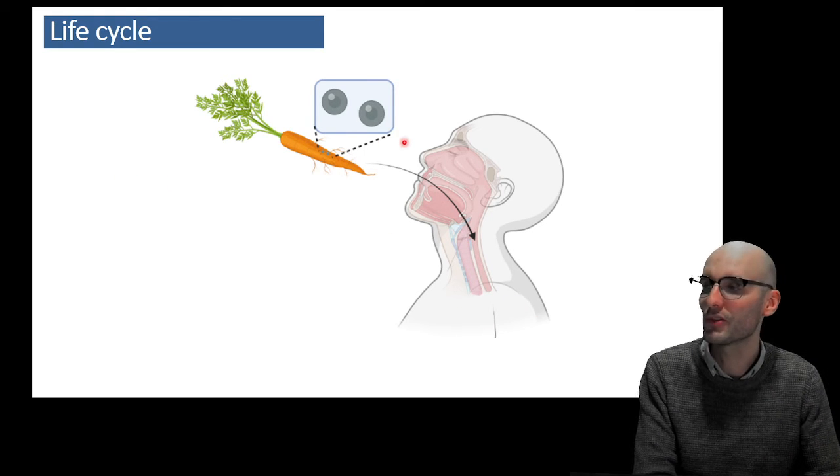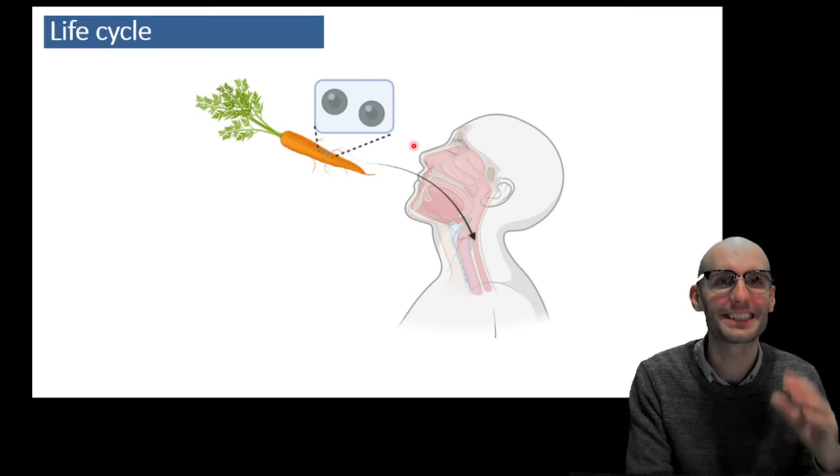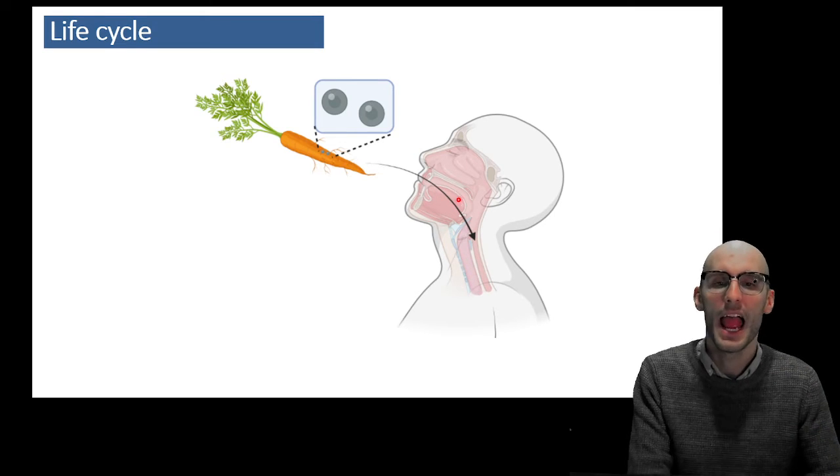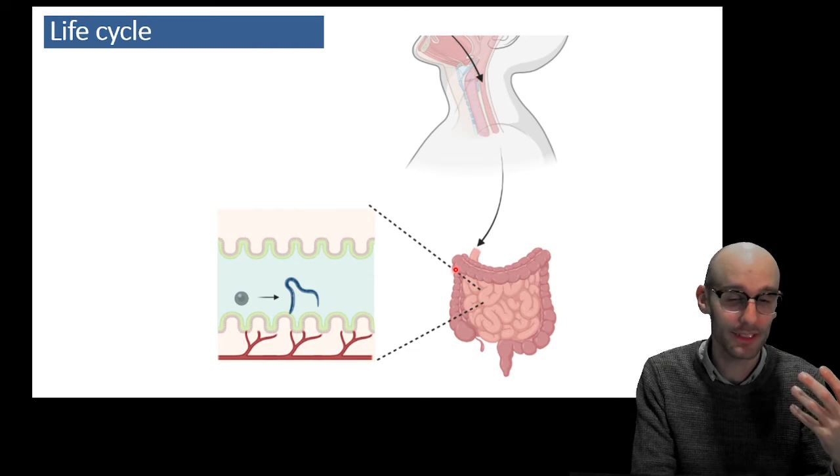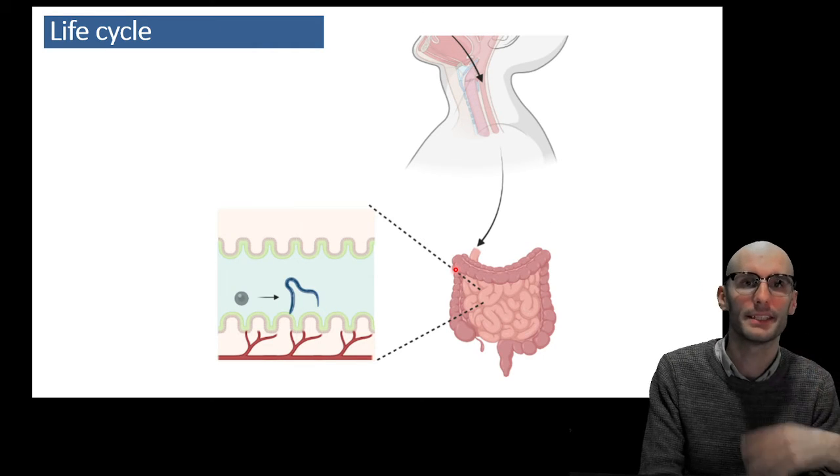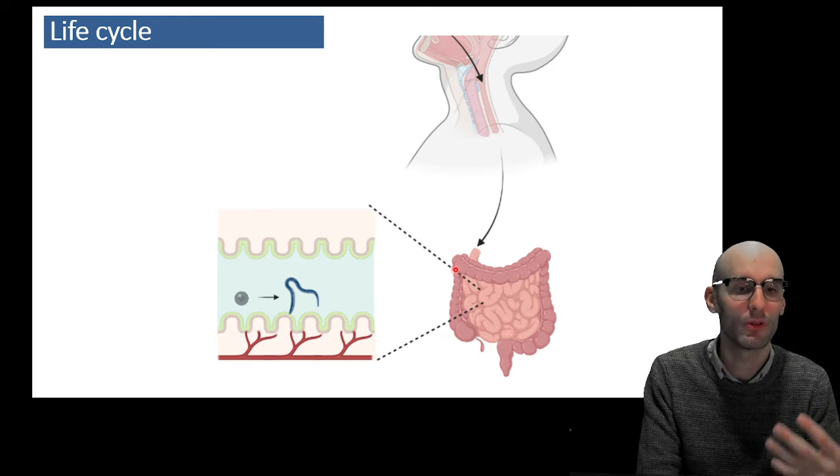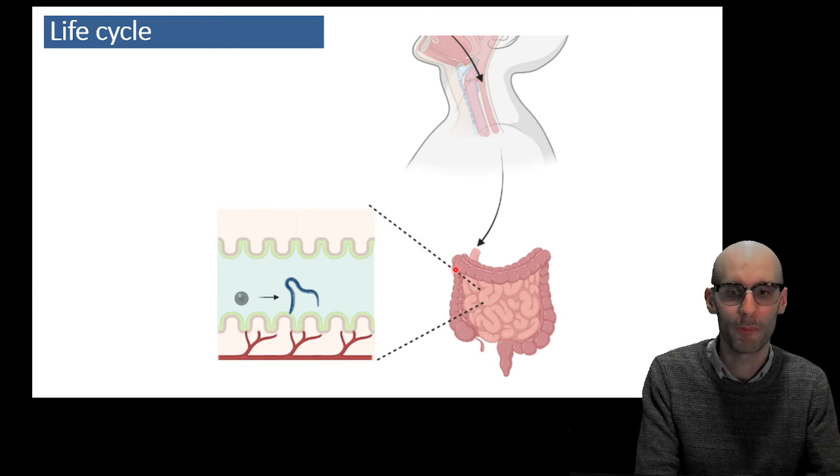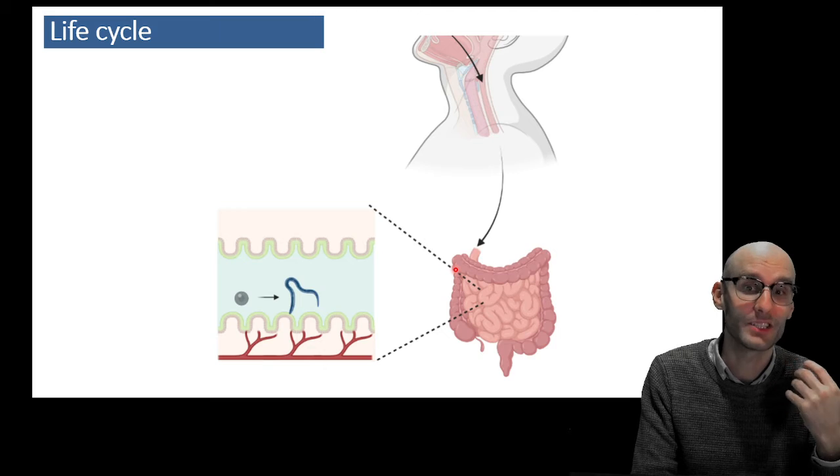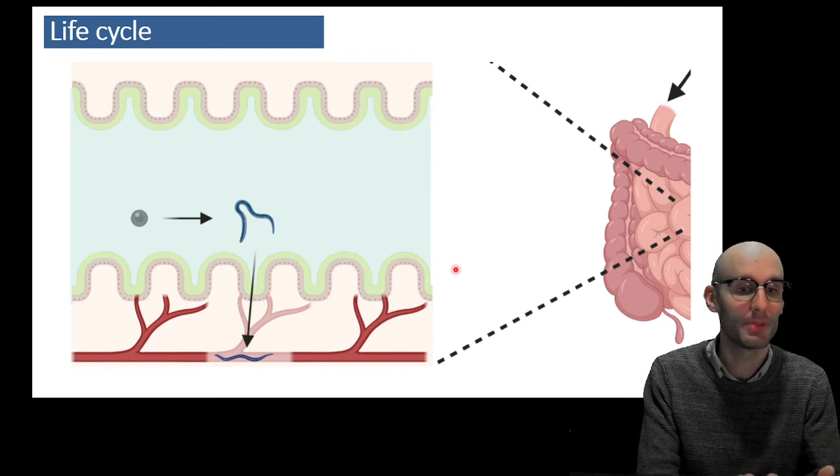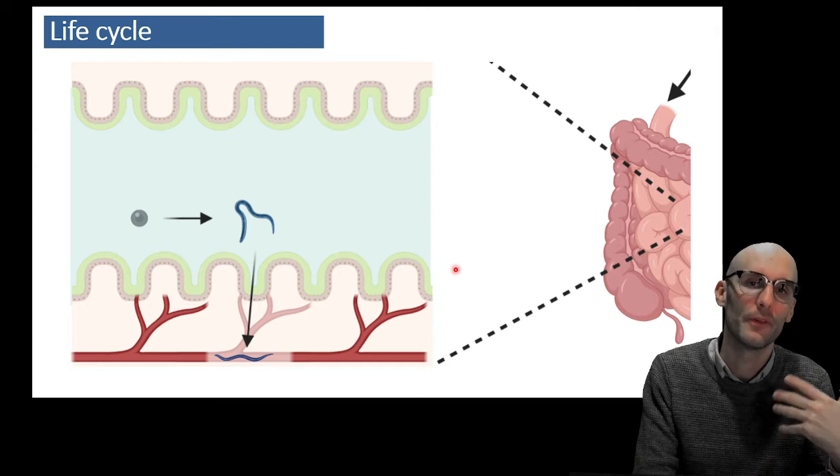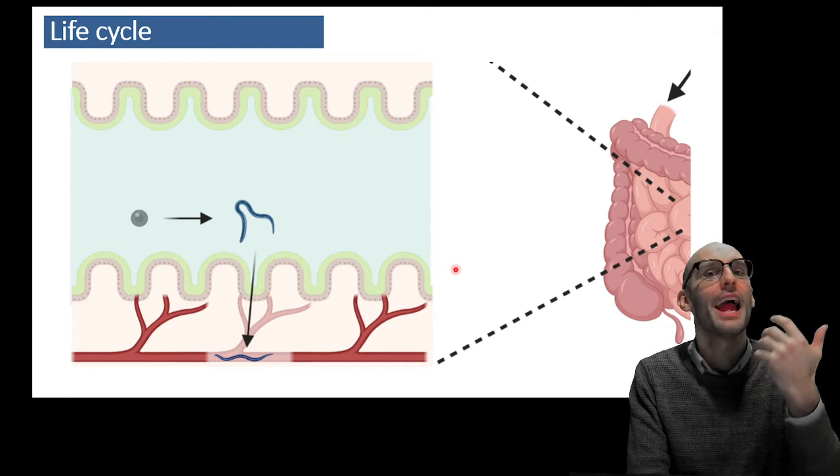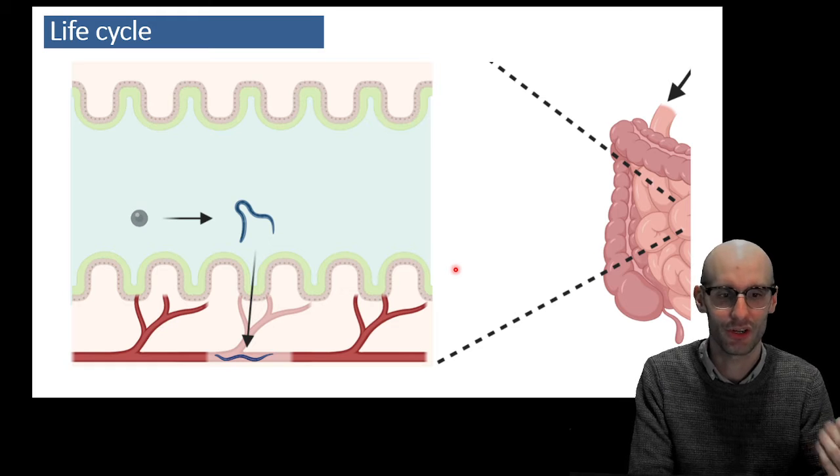So here we go. We've got a person eating a carrot and that carrot has some Ascaris eggs on it. They're going to swallow that down through the stomach into the small intestine. Now in the small intestine, these eggs are going to develop into a larval form of the Ascaris worm. This worm is going to be quite small and able to get into blood vessels. So it's going to tunnel through the wall of the intestine and get to the vein, which is the portal vein, which then goes up to the liver and then round out into the rest of the circulation.